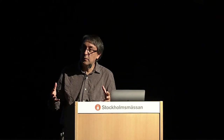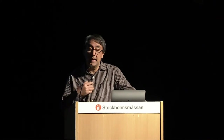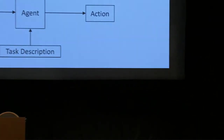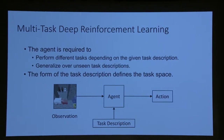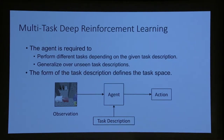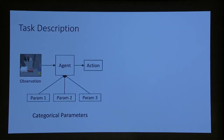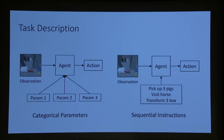The framework is multitask reinforcement learning where the agent is given a task description. The task description — language, if you like — defines the task space. The robot acts in the world using reinforcement learning, and given the task description and observation, its job is to produce an action. We consider two types of task descriptions: one using categorical parameters, and the more challenging one using sequential instructions, where the agent must execute the task implied by a sequence of instructions.